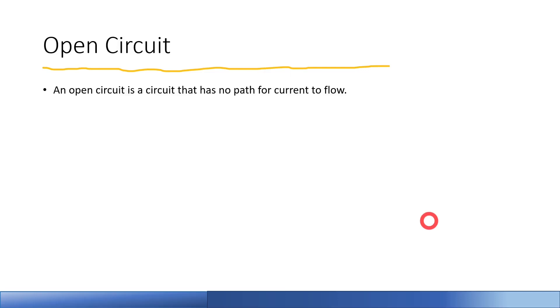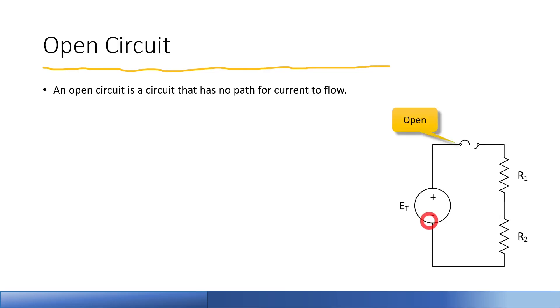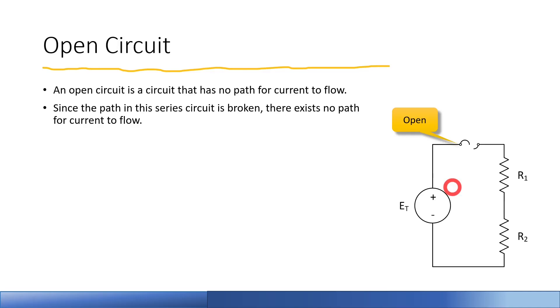Let's review an open circuit. An open circuit has no path for current to flow. The open here is represented by a broken fuse symbol, indicating the fuse is blown. Here's a great way to test if the fuse is blown without pulling it out — just use your voltmeter to determine whether it's actually a blown fuse.